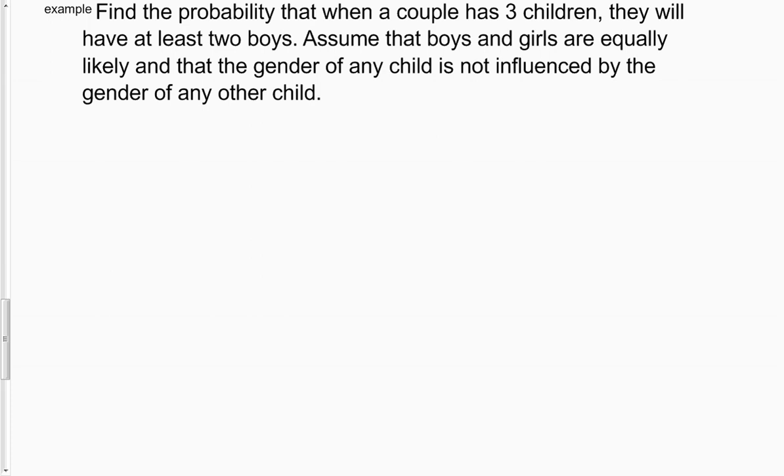meaning there's a 50-50 chance of having a boy or a girl, and that the gender of any child is not influenced by the gender of any of the preceding children or subsequent children. So that's a very strong assumption to make, but we need that assumption in order to apply the classical method.